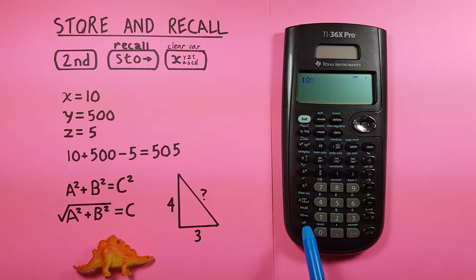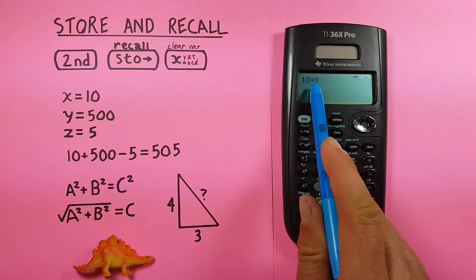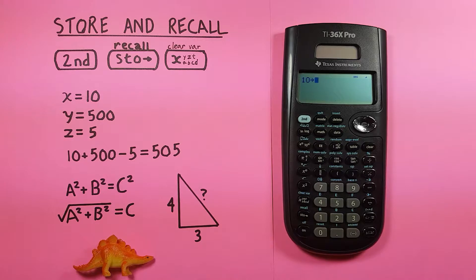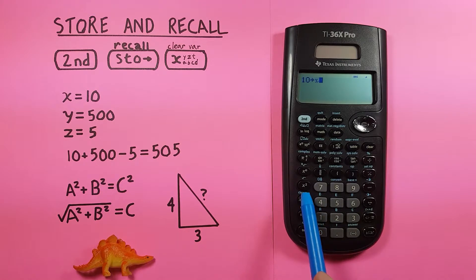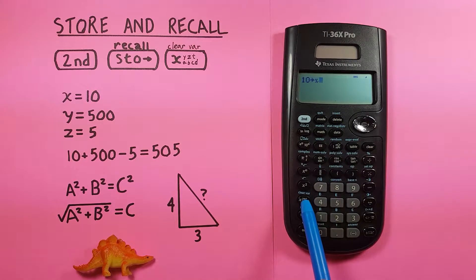And then what you want to do is choose the slot you want to store it in. You do that by pressing this XYZ key right here. So you press it once, you see you get an X, that would store it in the X slot.